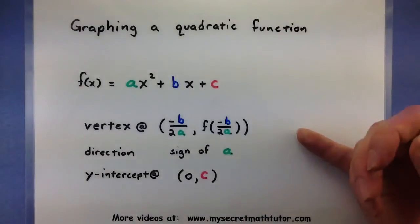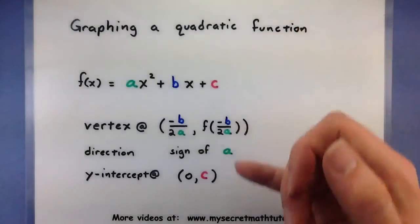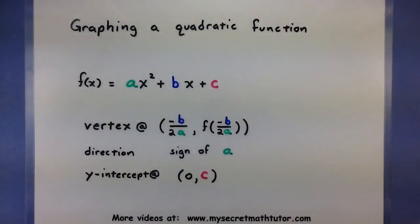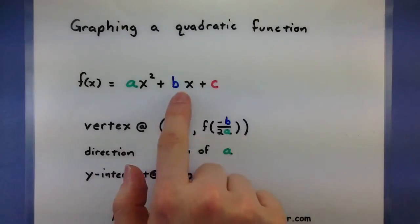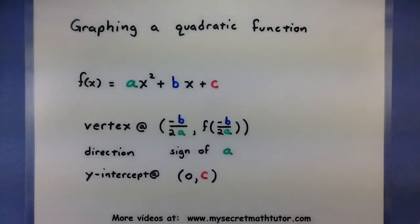One last little bit of information that may or may not be helpful is the c value on the end. This can give you the value of the y-intercept. That's because the y-intercept is where x is equal to 0, so it knocks out both of these two terms, leaving you with just c. Let's go through a couple of examples and see how we pull out this information to get a good graph.